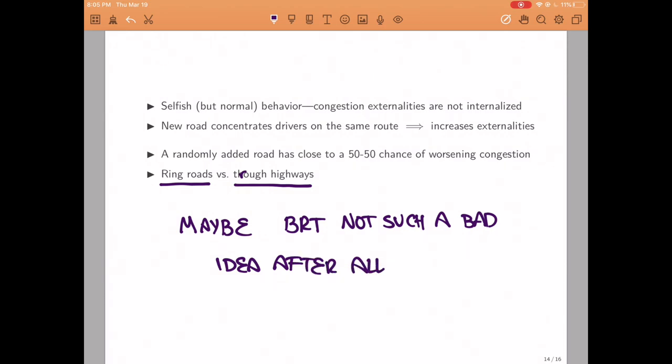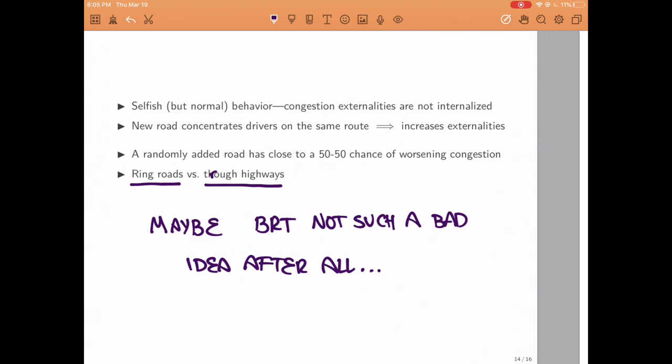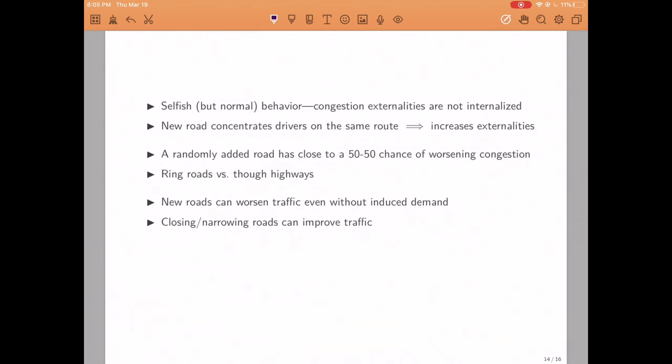Now, there are other reasons why building roads can increase traffic, for example, because when you build more roads, people tend to buy more cars, and that's something called induced demand, and you can read about it on Wikipedia. But for us, it's important to understand that even if you don't change the number of cars in the city and even if you don't change the number of trips that people are making, closing or narrowing roads can actually improve traffic if it results in configurations where people will have incentives to take different routes.